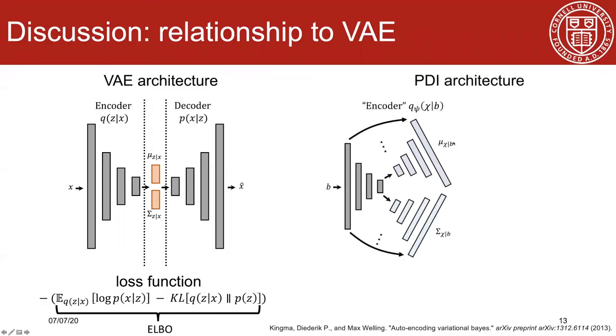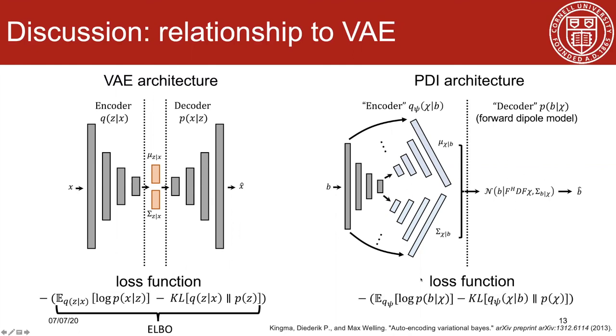In the proposed PDI architecture for QSM problem, the approximate posterior distribution is also a neural network encoder from input field b to susceptibility chi, whereas the decoder is no longer a neural network and doesn't need to be trained. Instead, it's the likelihood distribution from the forward dipole convolution kernel with additive Gaussian noise. The loss function remains the same if we treat the output susceptibility as the latent variable in VAE. So, the proposed PDI combines the modeling principle in VAE with the domain knowledge from medical physics.